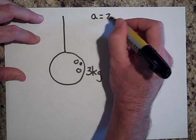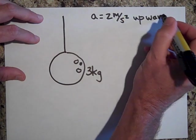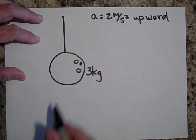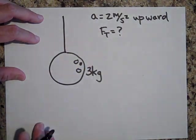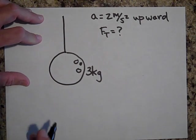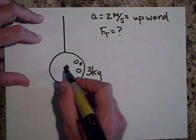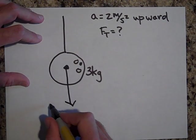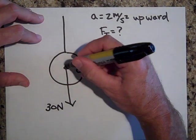And if I told you that the ball is accelerating upward at two meters per second squared and I asked you for the tension, then you just draw your force diagram. So I know there's 30 newtons down. Now I know there's got to be more than 30 newtons up.